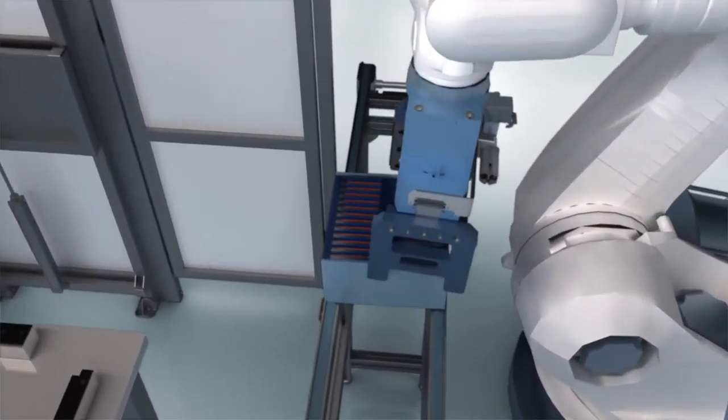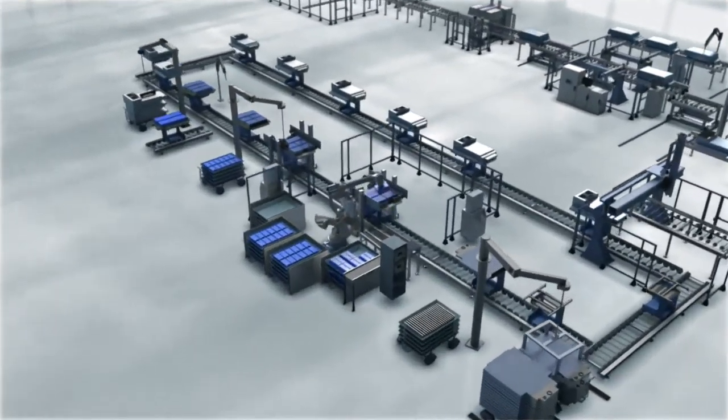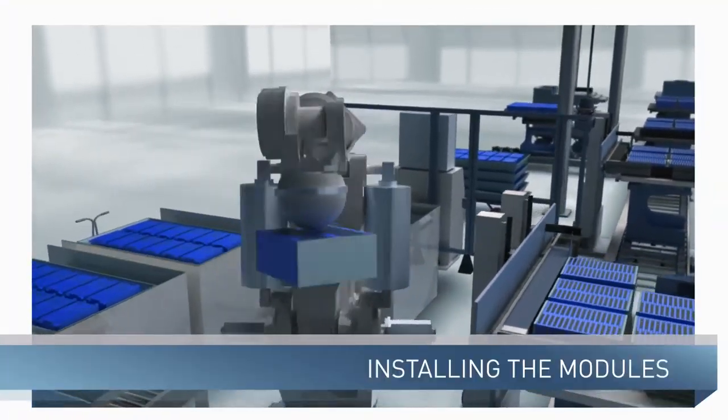In the battery assembly section, we configure the modules on a bottom plate provided for the vehicle battery. A robot attaches the required modules onto the base plate.